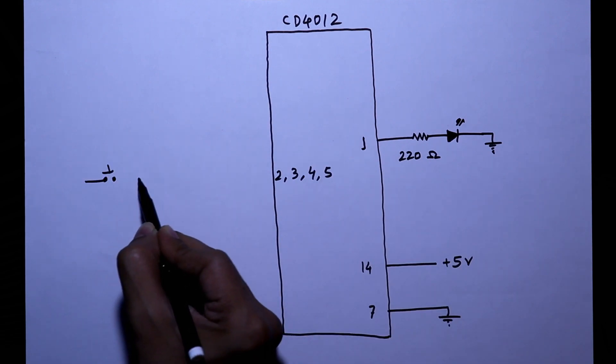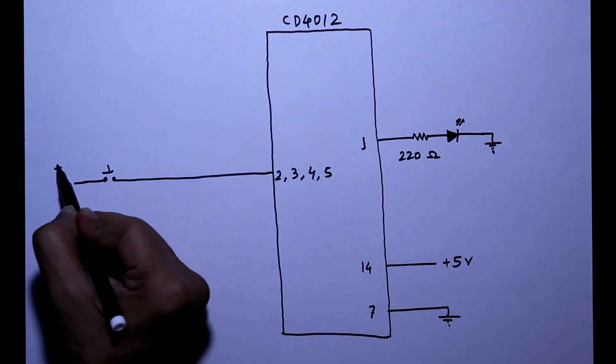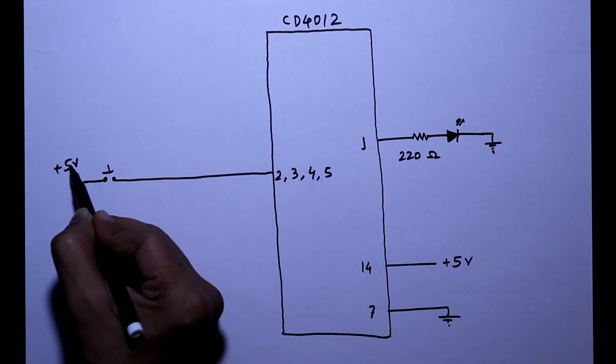We have to connect a push button switch, so we need 4 of them. And the other pin of the switch is connected to the plus 5 volt to provide the inputs.